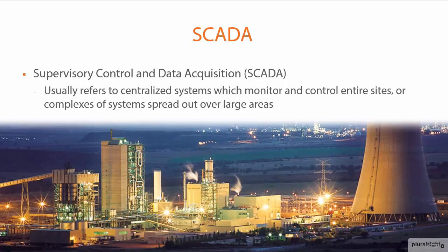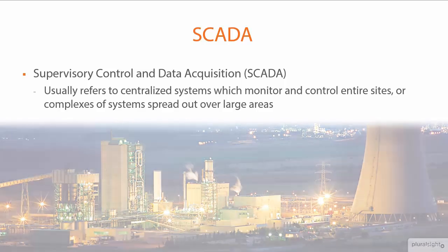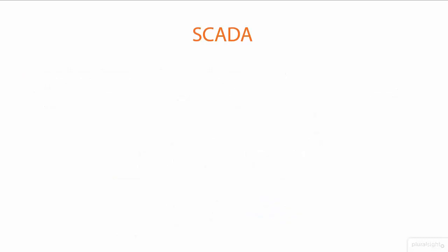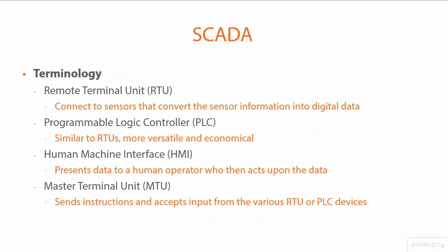Think about water treatment facilities, the electrical grid, the power grid — things that encompass large areas of critical infrastructure. This is just a simplistic diagram; we'll dig down deeper in just a moment. First, let's understand some of the terminology within a SCADA environment.